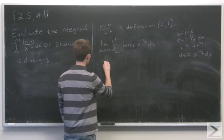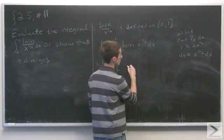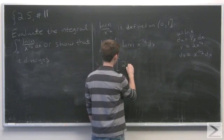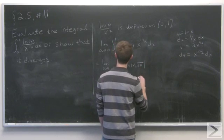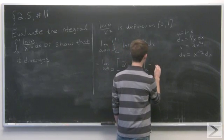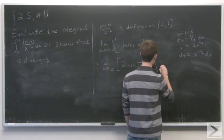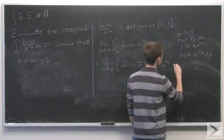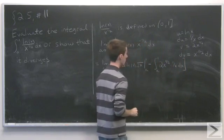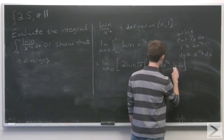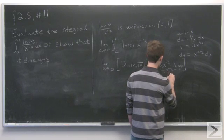Now we can use this to evaluate the integral. We keep the limit on the outside, and we have uv — that's 2 times natural log of x times square root of x — evaluated from a to 1. And subtract the integral from a to 1 of v du, which is the integral of 2x to the one half times 1 over x dx.